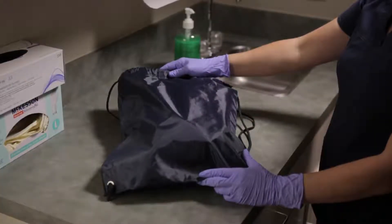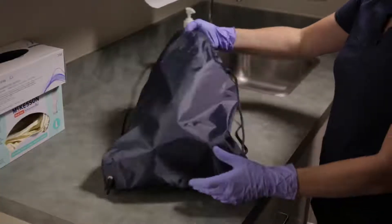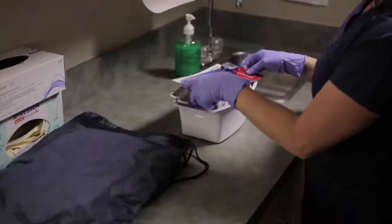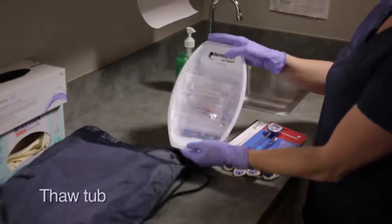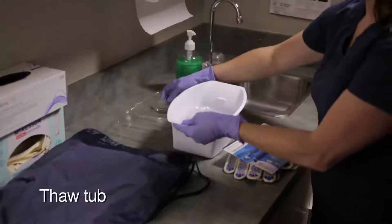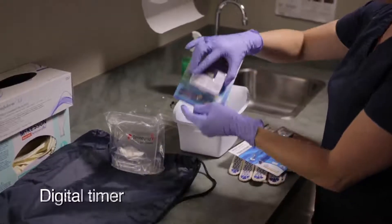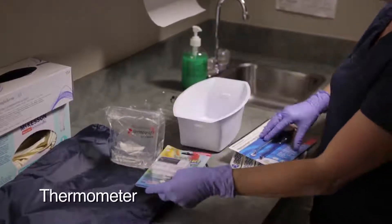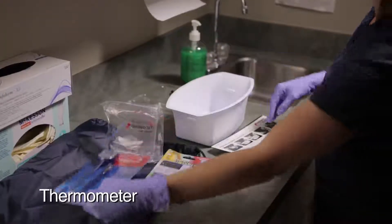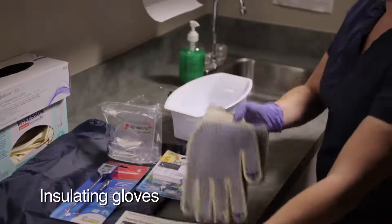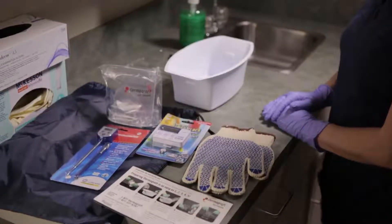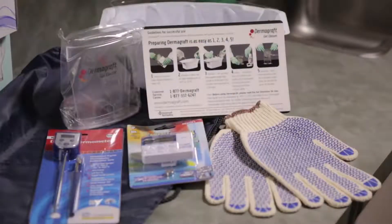The essential items needed to prepare Dermagraft are provided within the reusable thaw kit. The kit consists of the following items: the thaw tub and lid, Dermagraft rinse stand, digital timer, thermometer, preparation card and insulating gloves. A thaw kit will be provided on your first order of Dermagraft, attached to the outside of the shipper. Additional thaw kits may be requested from customer service or your local representative.